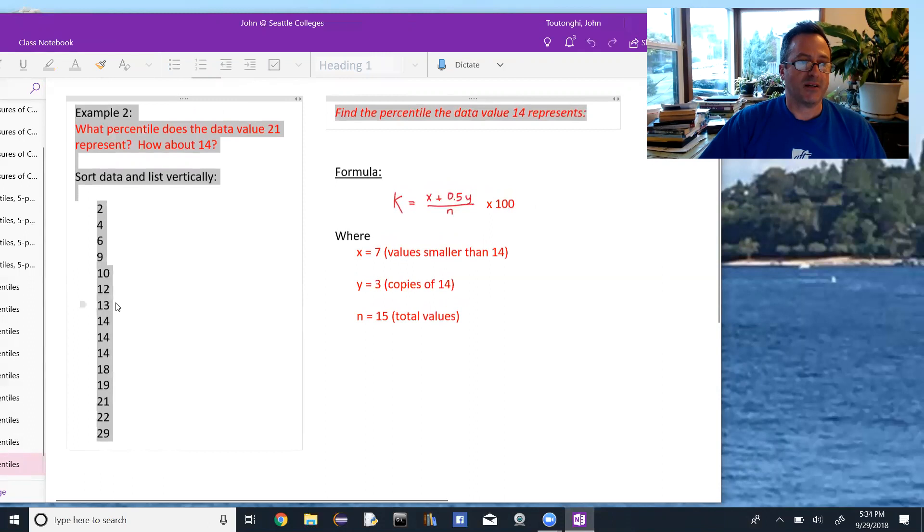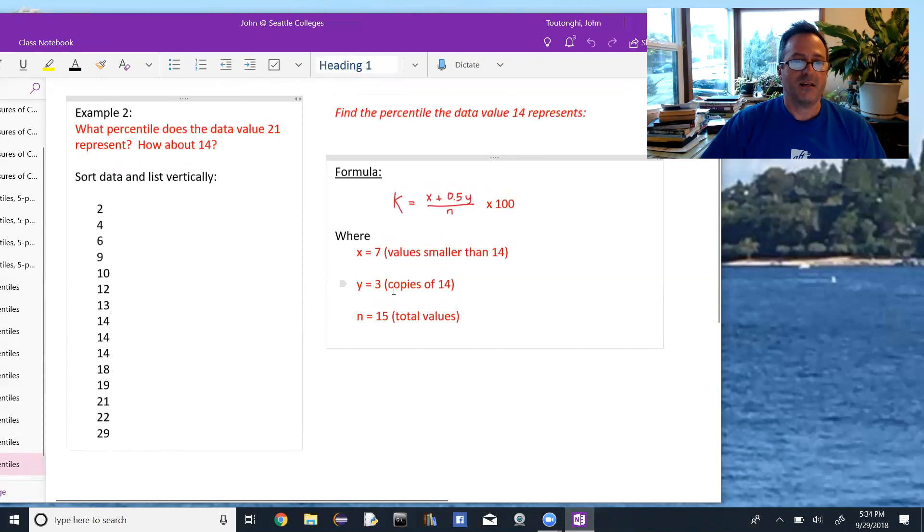And then x, the number of values smaller than 14, is 1, 2, 3, 4, 5, 6, 7. Y, the number of copies of 14, there are three of them, and n, again, is 15.